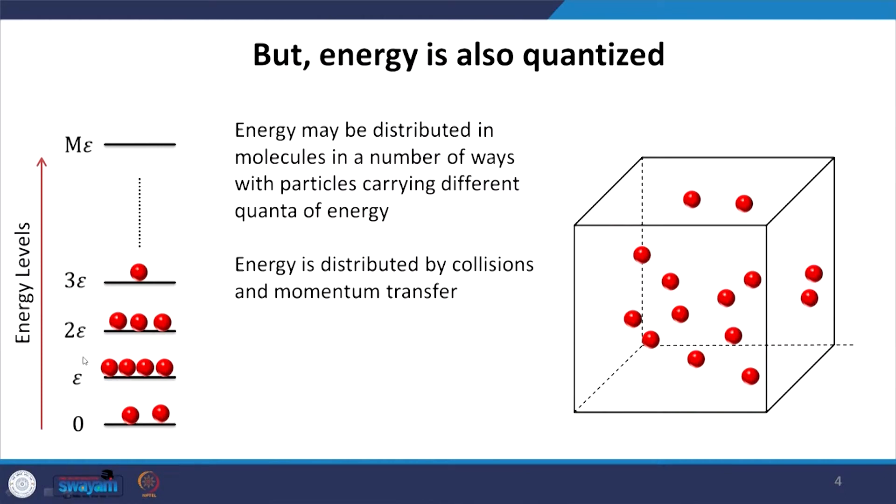Let us say the discrete unit of energy is ε. Then a particle can take an energy of 0, ε, 2ε, 3ε, 4ε, and so on. It cannot take any value between 0 and ε — the energy it can take is only discrete, in packets. Of course, the spacing need not be uniform; there can be non-uniform energy spacing. But the key point is that the energy has to take discrete values. We are assuming uniform spacing in multiples of ε, but the key point is that it must be discrete.